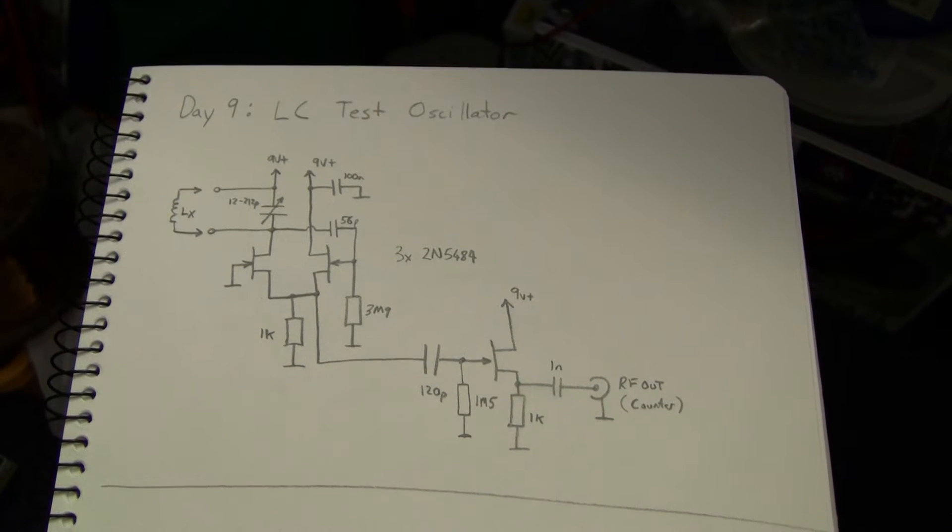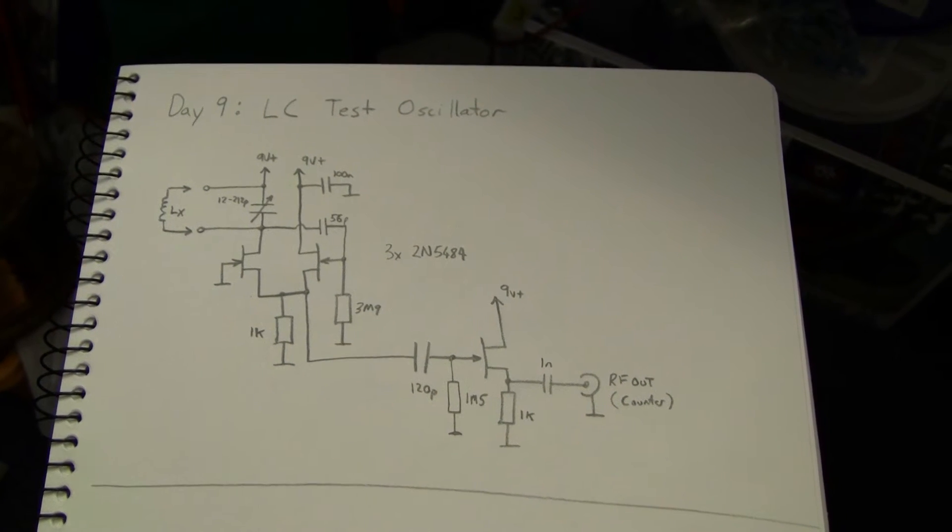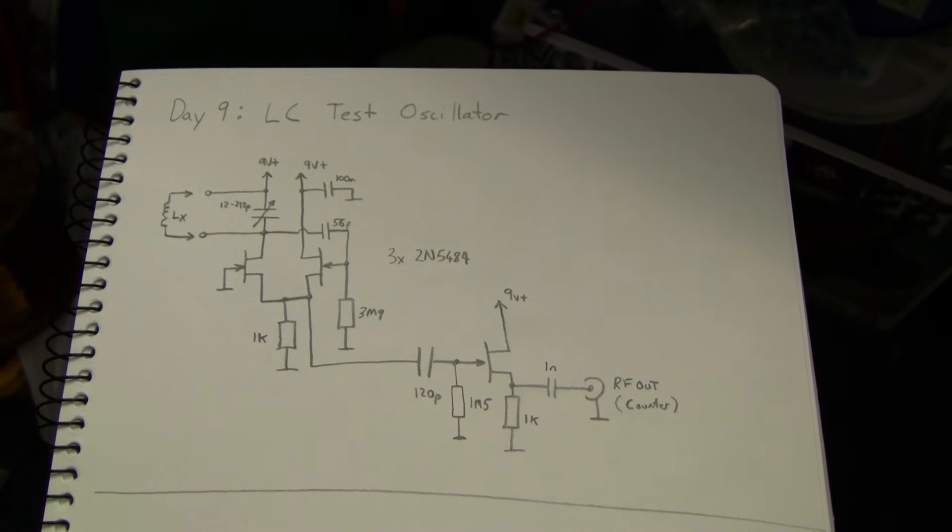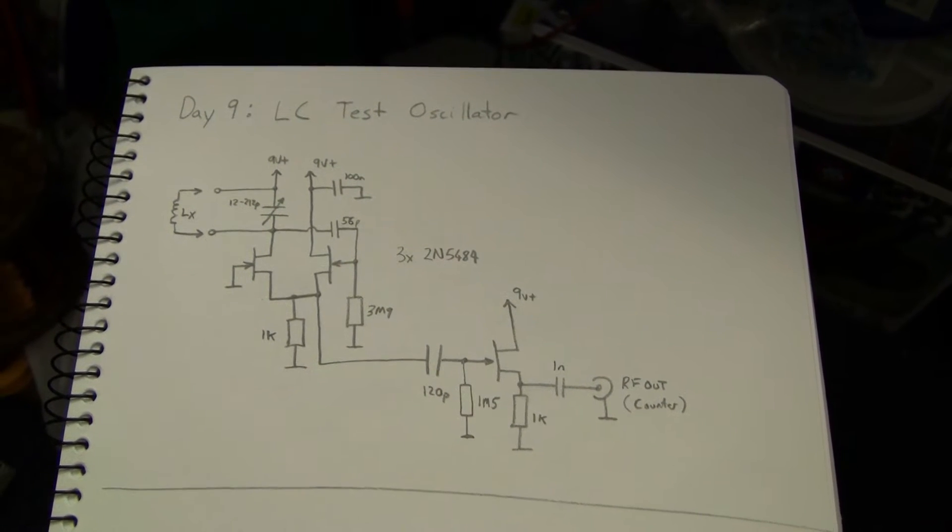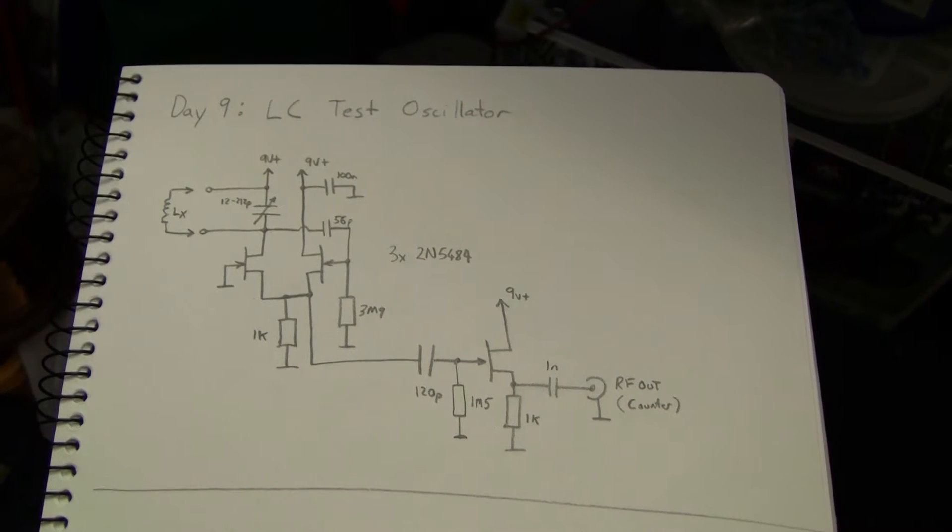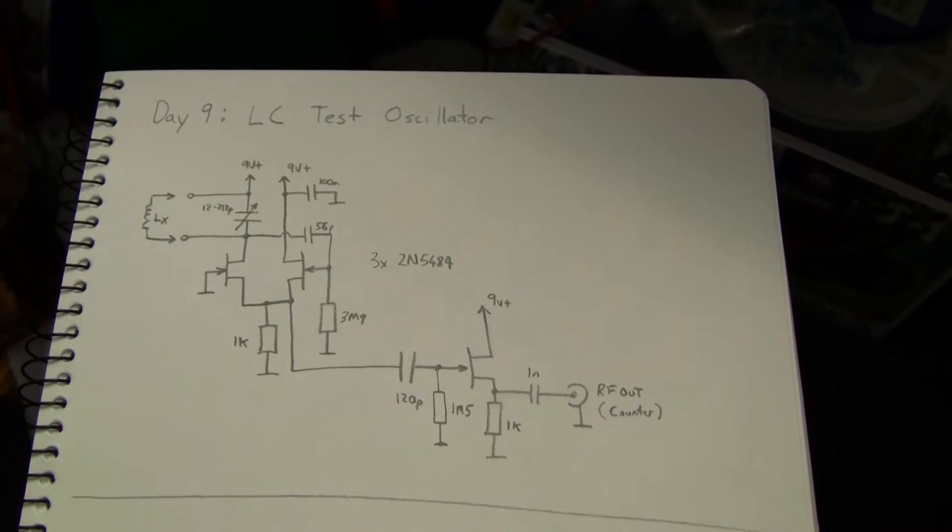Day 9: LC test oscillator. This is a very old circuit. You've probably seen it yourself in numerous places. The first time I saw it was actually made using vacuum tubes, but it's very simple.